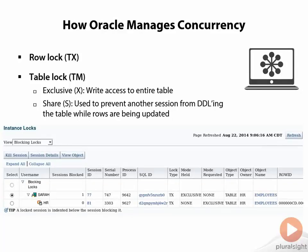How Oracle manages concurrency — this slide tells us that we have row level and table level locks. There are a few other varieties, but the two main categories of table lock are the Xlock and the Slock. Same thing in SQL Server, because it's the same basic principle.